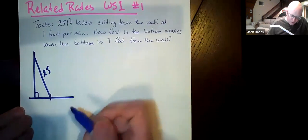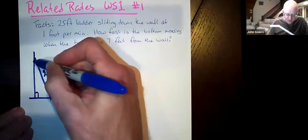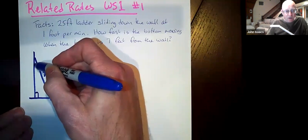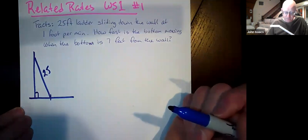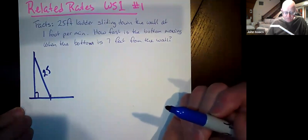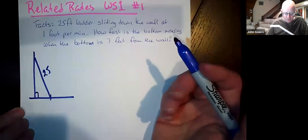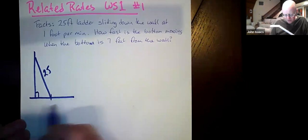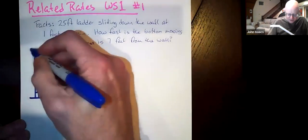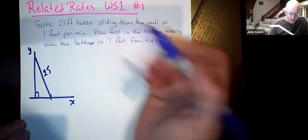And we also know that the top of this ladder is moving down the wall at one foot per minute. So if we think about this diagram, kind of look at it and say, oh, well, maybe this could be my x direction. So we'll call this like an x axis, and this is our y direction, we'll call this a y axis.